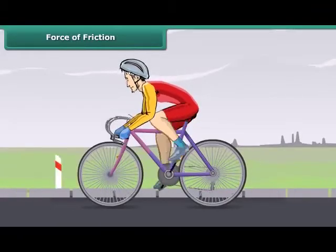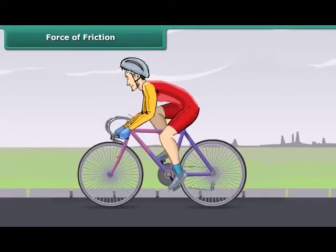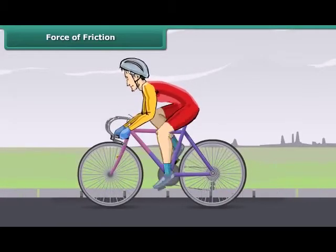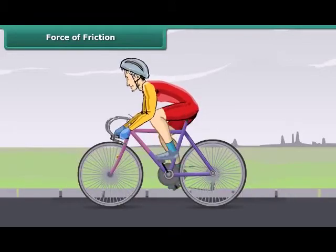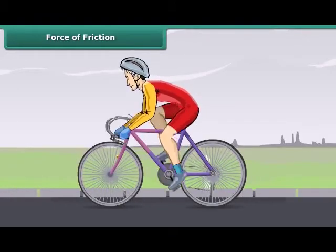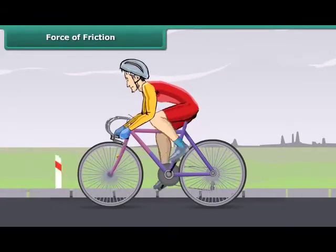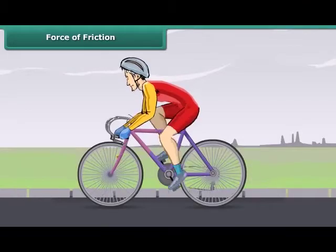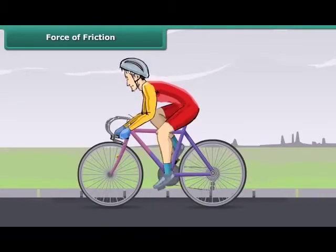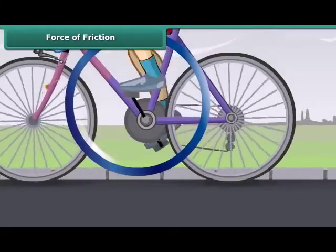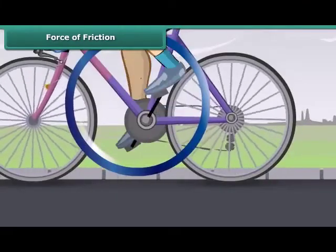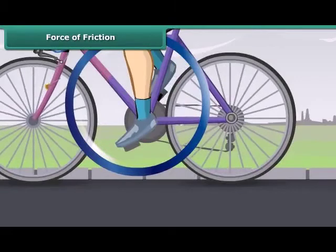Let's take an example from daily life. While moving on a bicycle on the road, you pedal the bicycle and it moves on and on. When you stop pedaling, the bicycle slows down and gradually comes to a stop. Why does this happen?